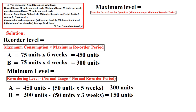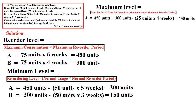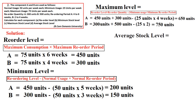For maximum level — formula: reorder level plus reorder quantity minus minimum usage multiplied by minimum reorder period. For A: 450 + 300 − (25 × 4) = 650 units. Here 25 units is the minimum usage and 4 weeks is the minimum reorder period. For B: 300 + 500 − (25 × 2) = 750 units. This is the maximum level for B.